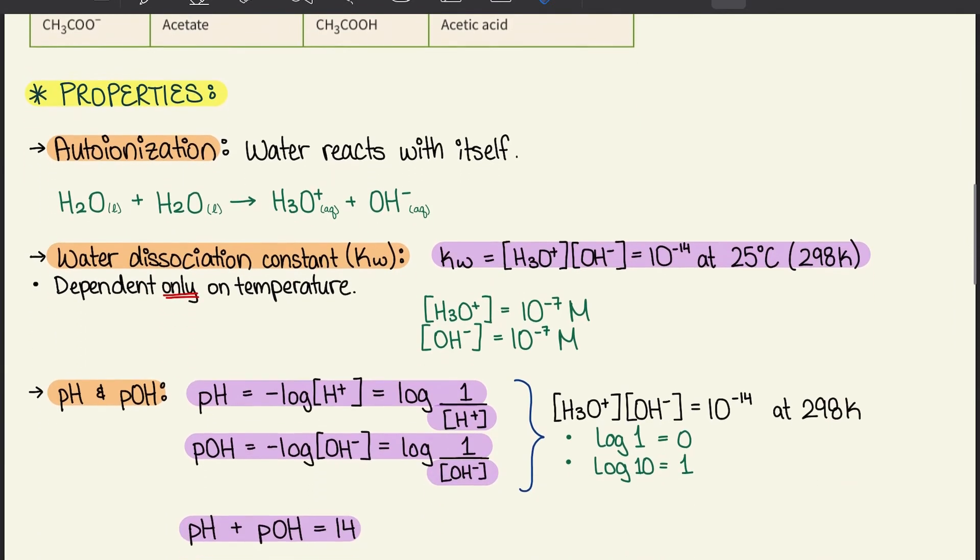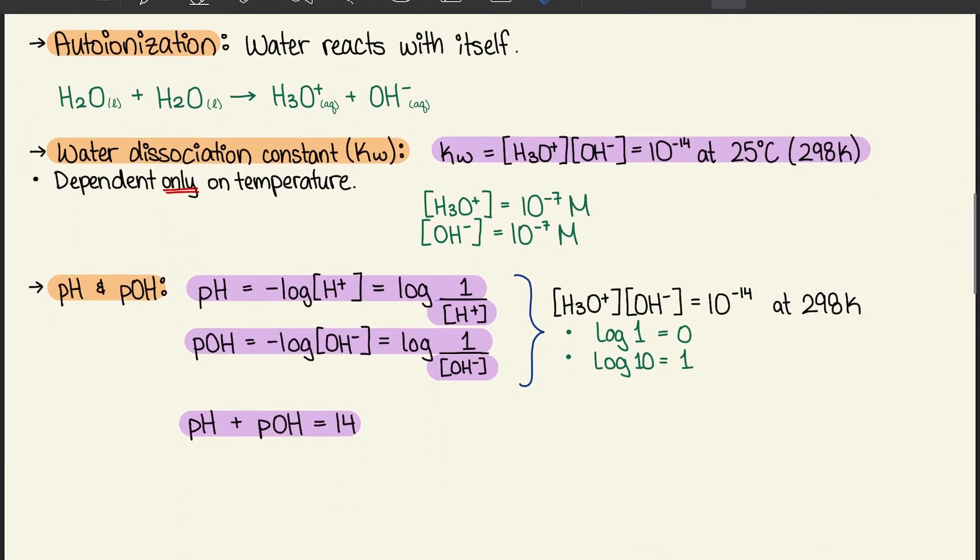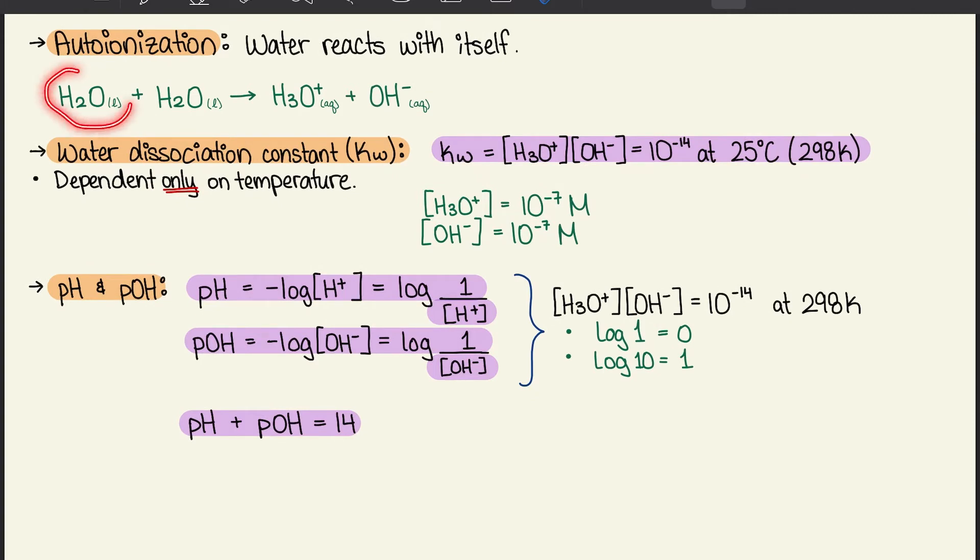Moving on to 10.2, we're going to talk about properties. Auto-ionization is when water reacts with itself. Water plus water gives a hydronium ion plus a hydroxide ion.